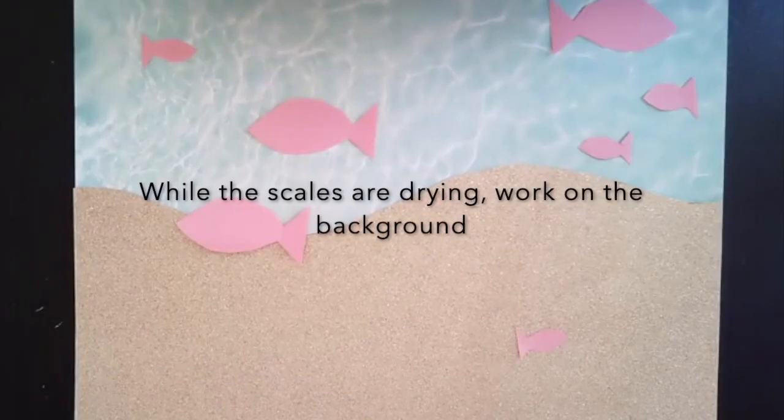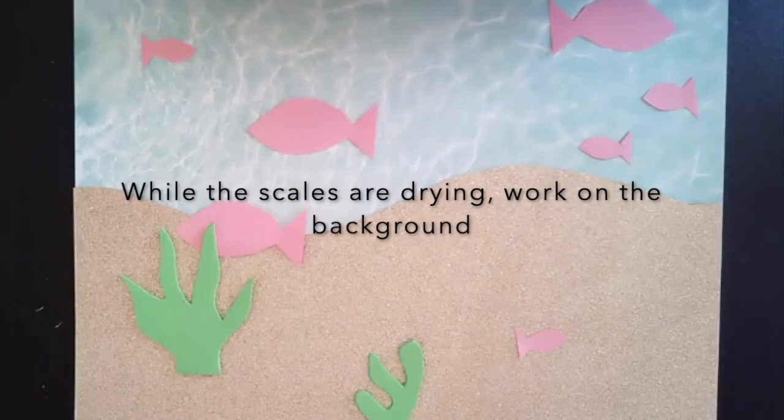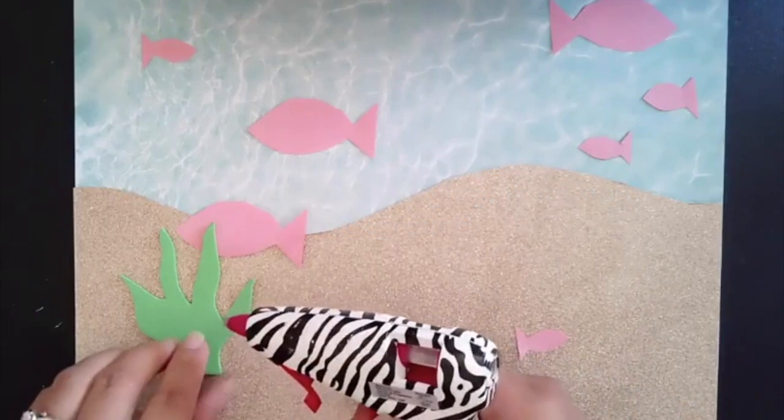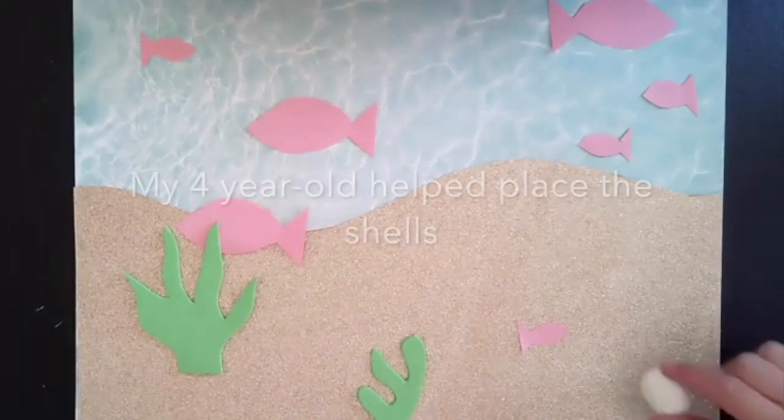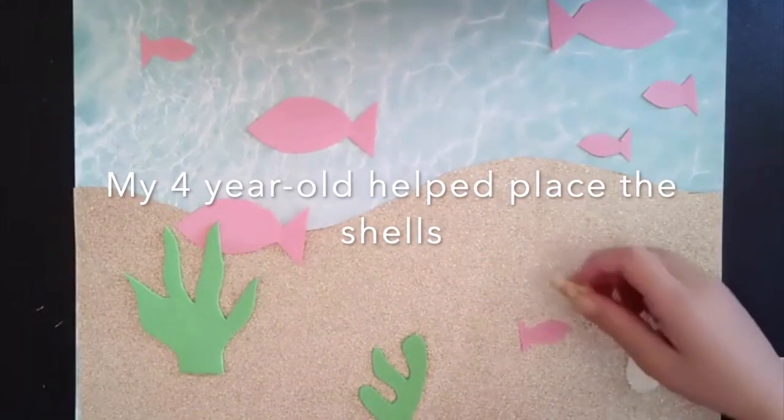Since we're focusing on the element of art space we want to review the vocabulary with our child as we're putting the pieces on the paper. So the background in this piece would be the water.